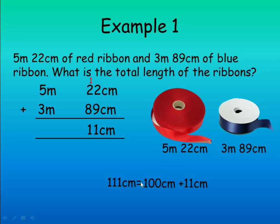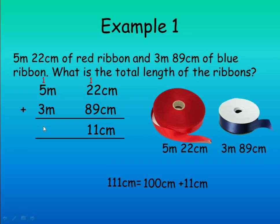111 centimeters is the same as 100 centimeters plus 11 centimeters, so we leave 11 centimeters. We carry 100 centimeters — when it gets to the meters place it becomes 1 meter, because 100 centimeters is 1 meter. 1 meter plus 5 meters is 6 meters, and 6 meters plus 3 meters is 9 meters. So the total length of the ribbons is 9 meters 11 centimeters.